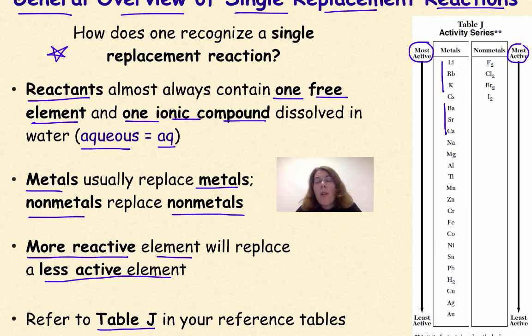Because we know that the reactivity of metals will typically decrease as you go across a period from left to right, and increase as you go down a group, and then we get into some of our transition metals in the middle.